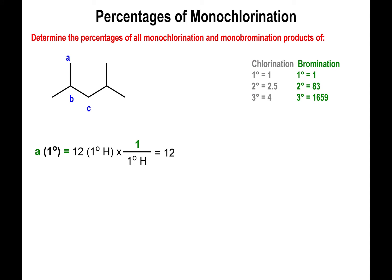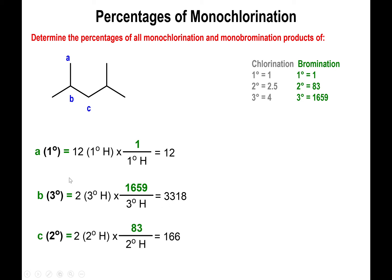Now let's look at the bromination. For the primary hydrogens, we have 12 of those — the relative rate is only 1, so you get 12. For type B, which is a tertiary hydrogen, we have two of them, and for every tertiary the rate is 16.59. So we multiply 2 by 16.59 and get 33.18. For the secondary hydrogens — the type C hydrogens — there are only two. We multiply that by a relative rate of 83, corresponding to a secondary CH bond in bromination, and we get 166. Adding all of these values together gives us 211.18 as the total.